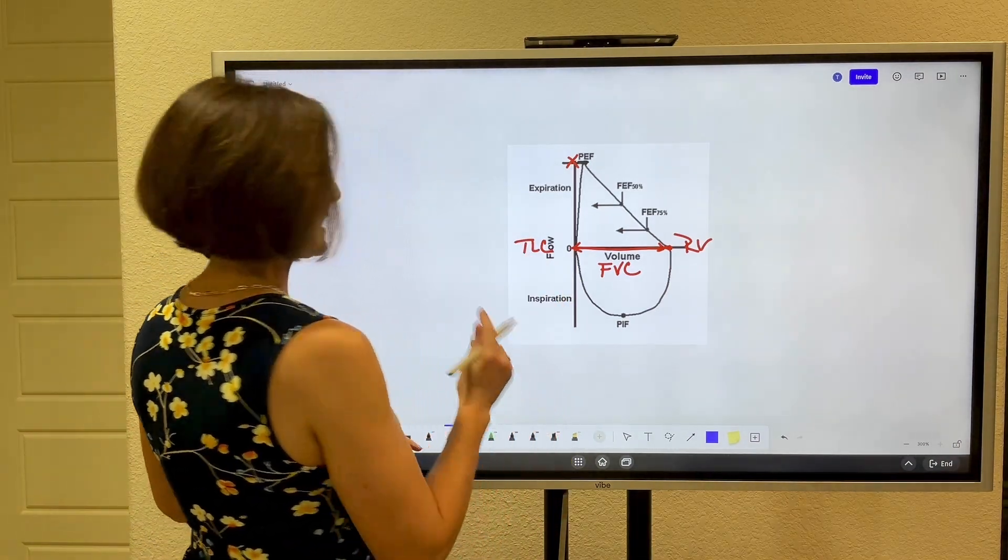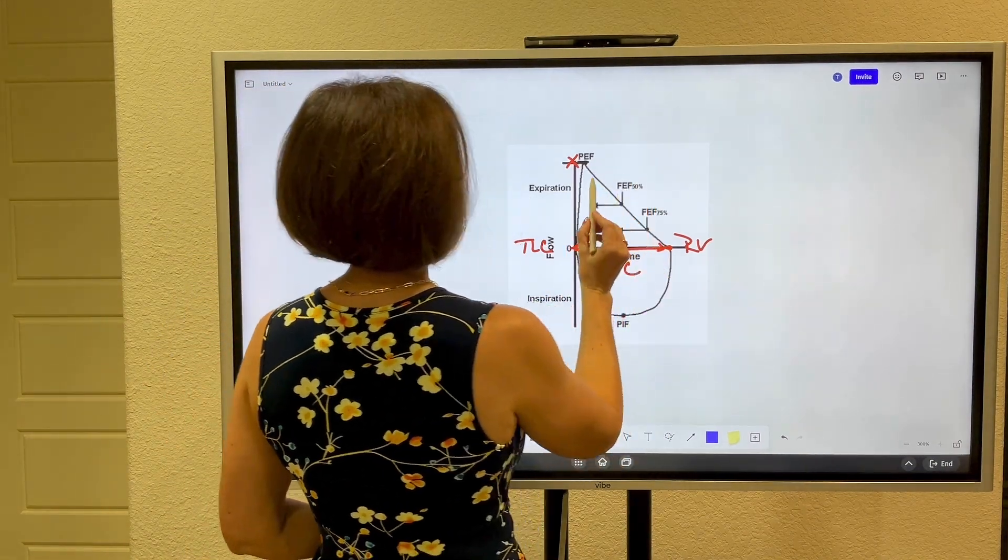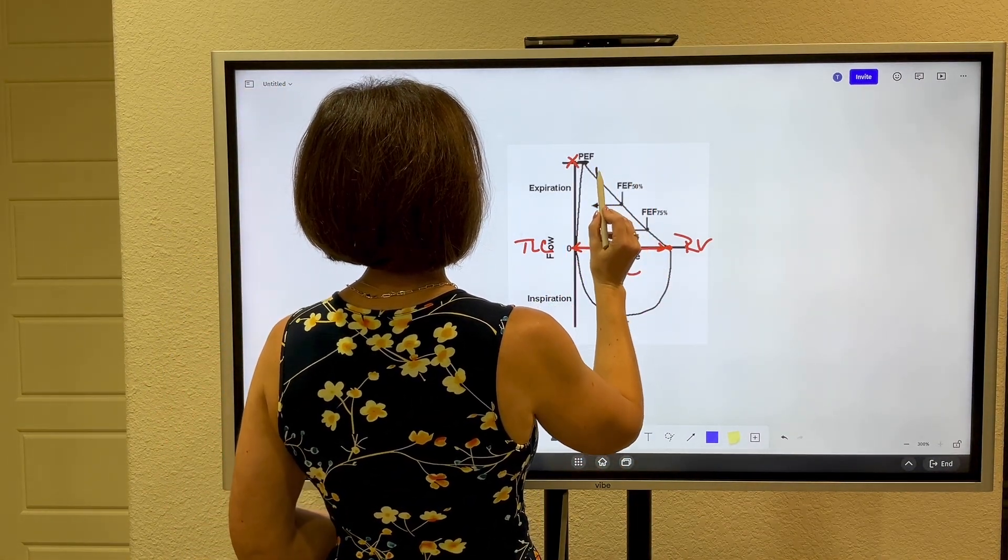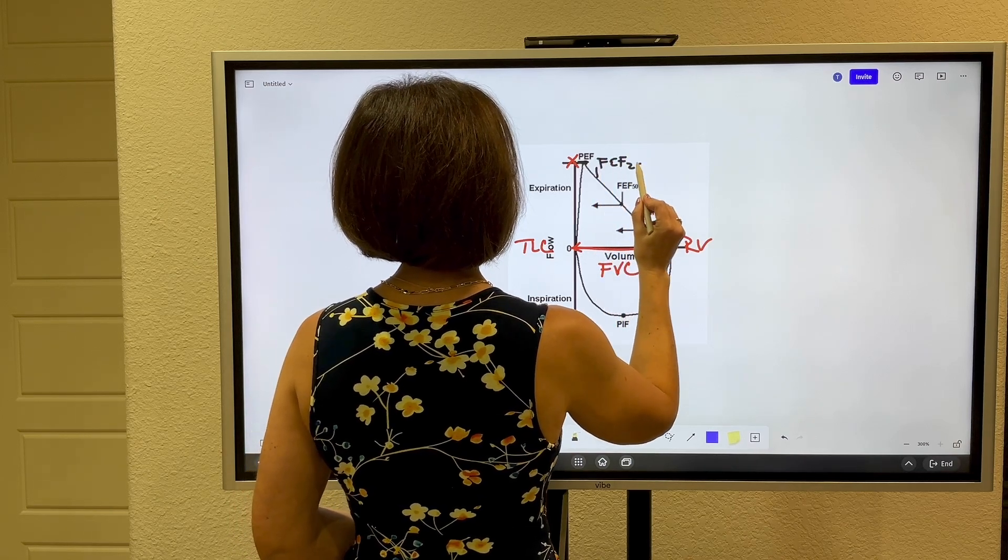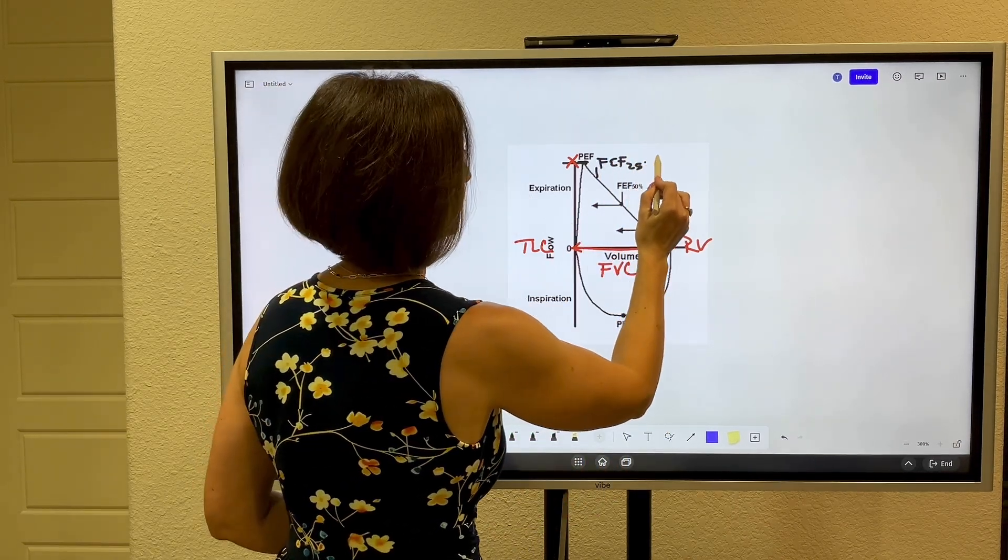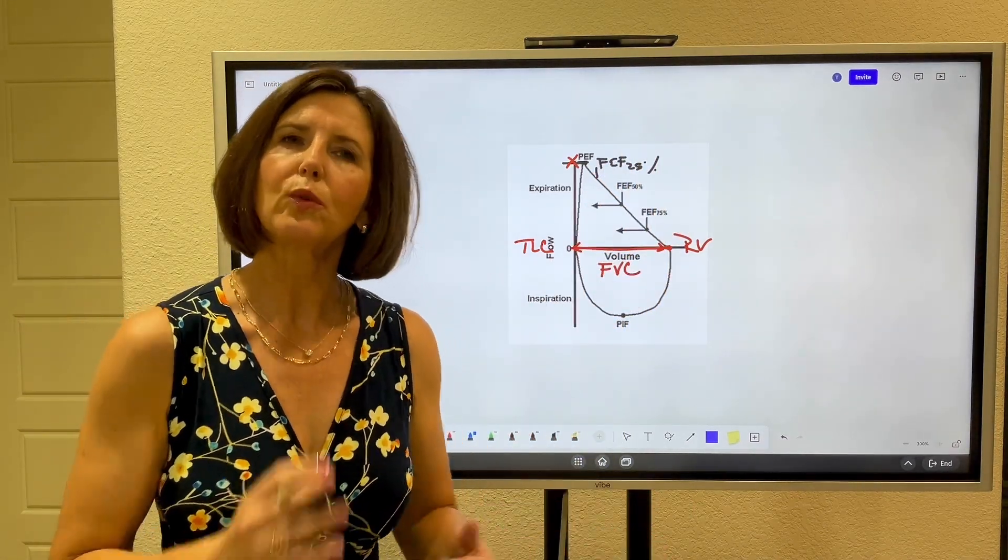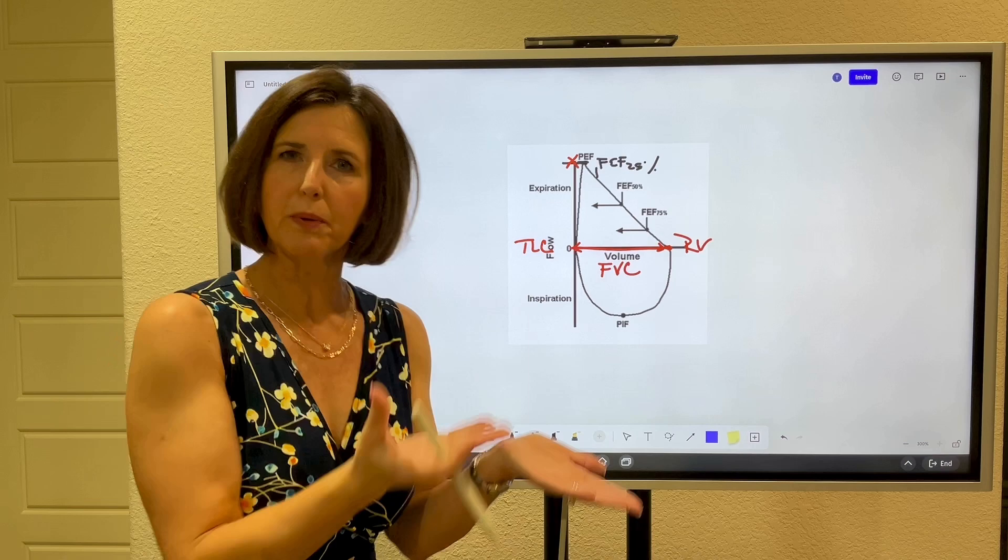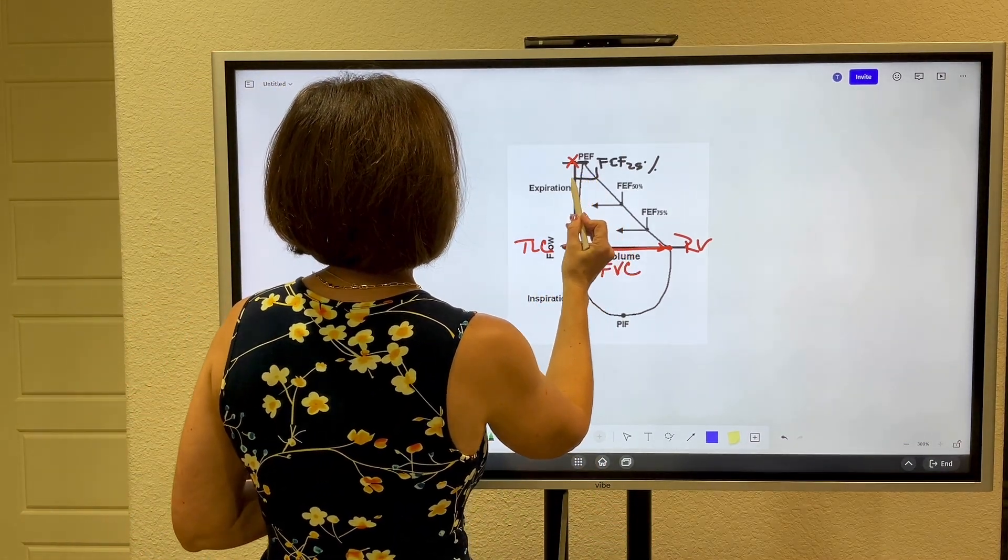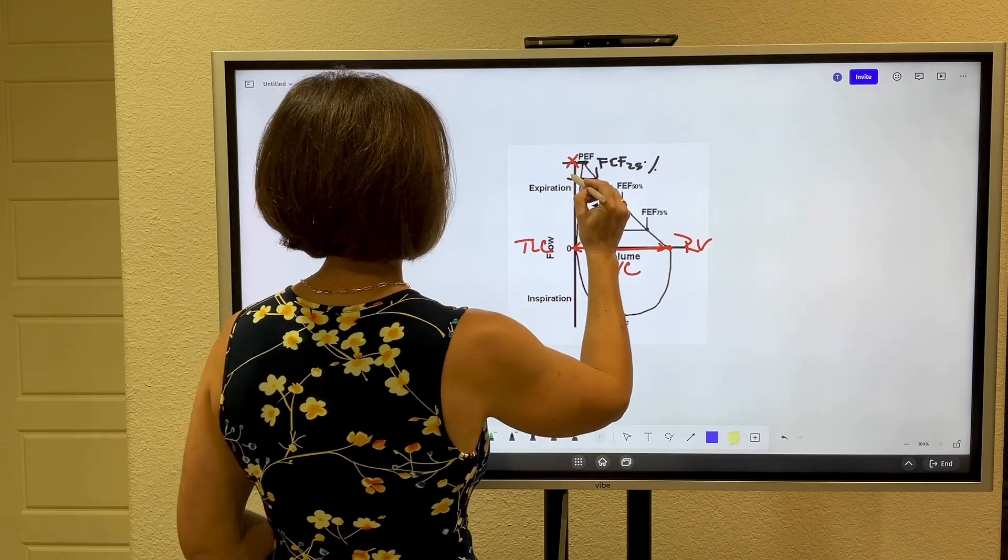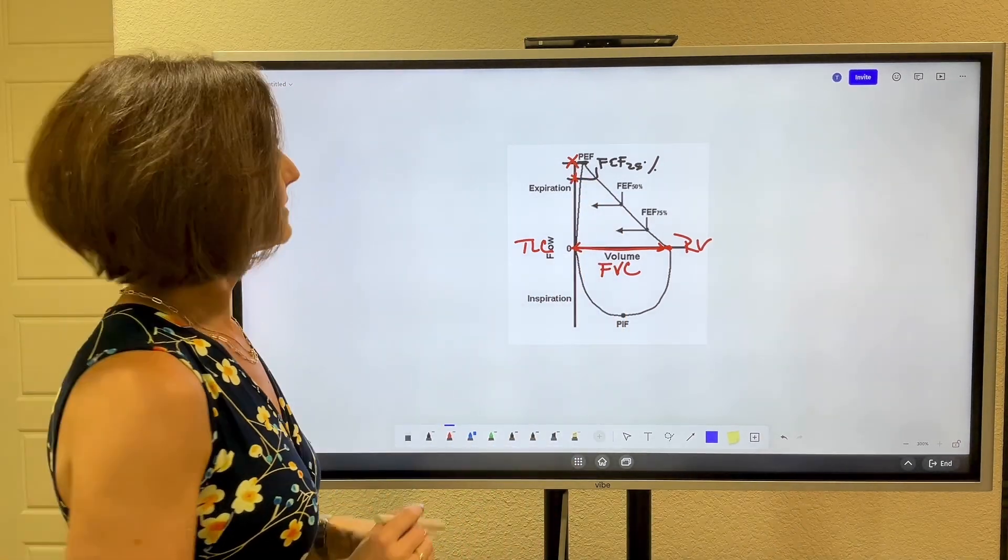As that patient continues to exhale now we're going to have a point on the graph. It's not drawn here so I'm going to draw it. We have a point on the graph here that is called the FEF 25. Now 25 percent. Don't make this hard. This stands for the forced expiratory flow when 25 percent of the volume is blown out of the chest. And so you find it. You come over here and you measure that flow on that vertical axis.